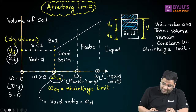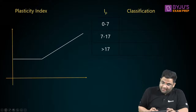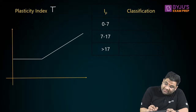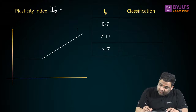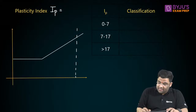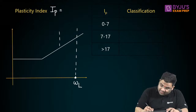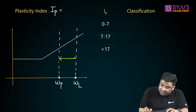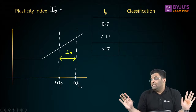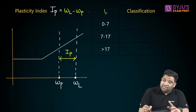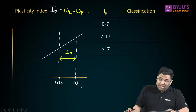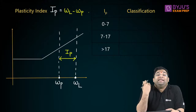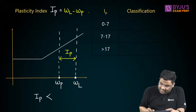Now let us discuss the plasticity index. The plasticity index (IP) is the difference between the liquid limit (W_L) and the plastic limit (W_P). This IP can never be less than zero — it can never be negative — because the liquid limit can never be less than the plastic limit.